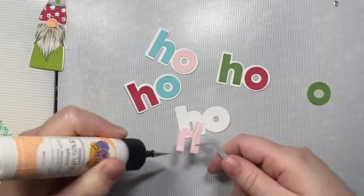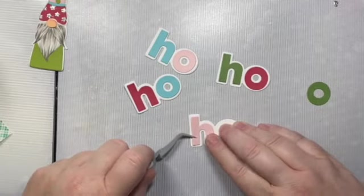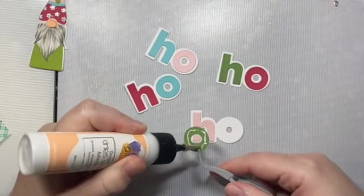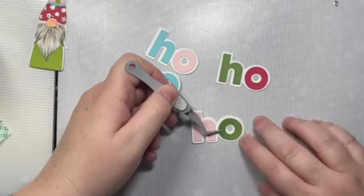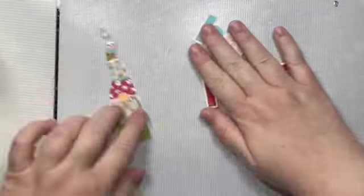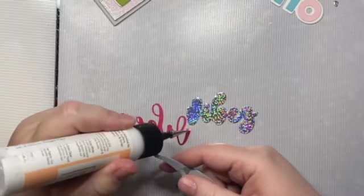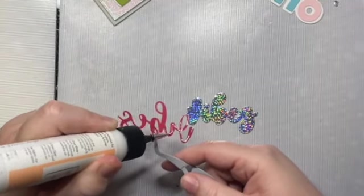So I'm just gonna finish up gluing all of those down to our background. And I love that white background that you get from the die cut. It just gives it a really nice clean look. And then once we have all of these guys cut out and glued down, we can assemble our card.